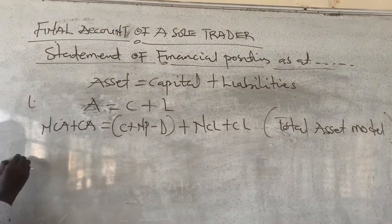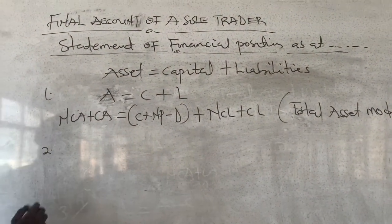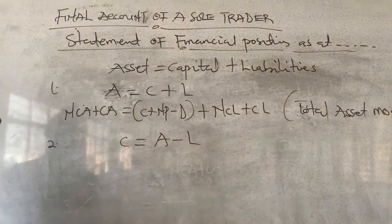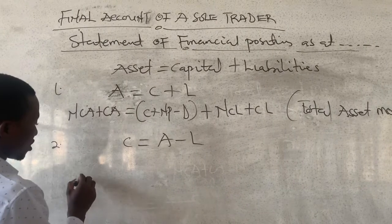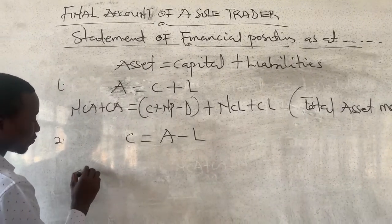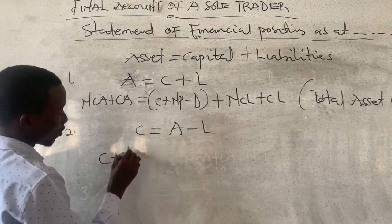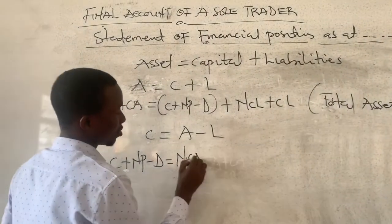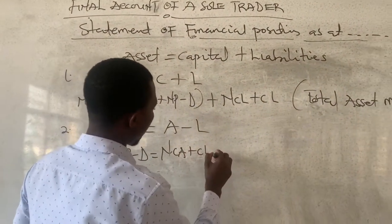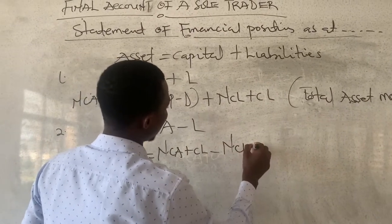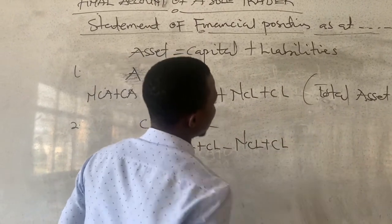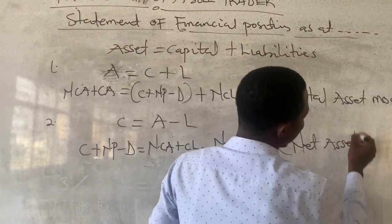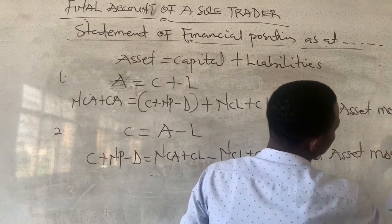We also have another model where capital equals assets minus liabilities. This is the owner's equity: capital plus any net profit or loss minus drawings equals non-current assets plus current assets minus non-current liabilities plus current liabilities. We call this the net asset model.